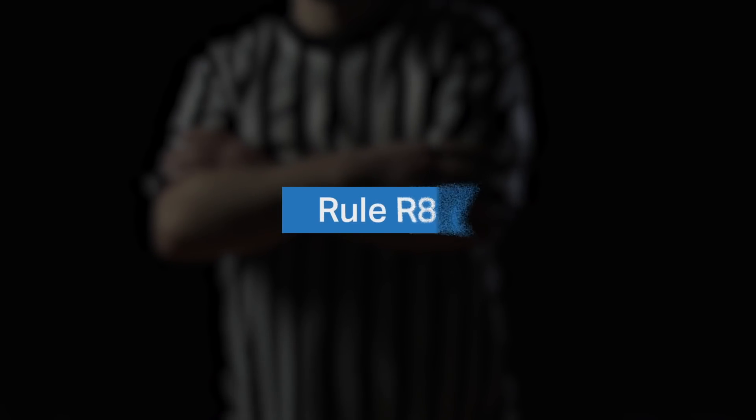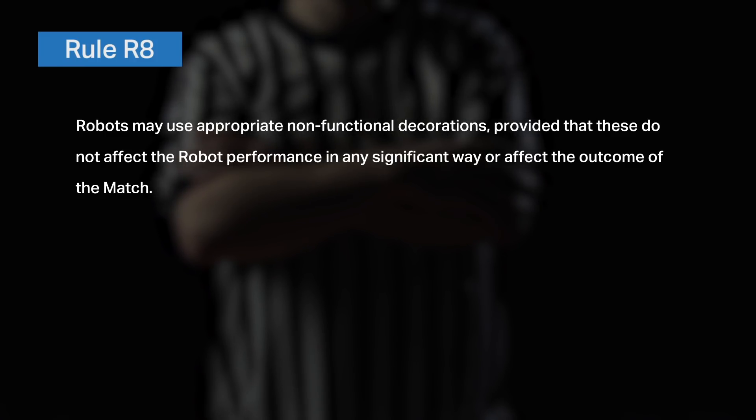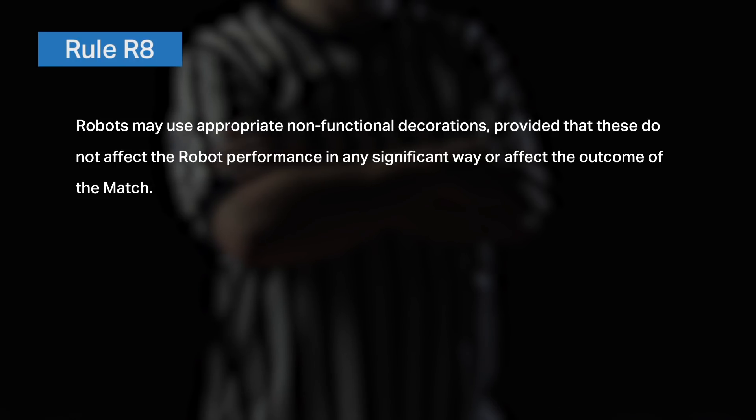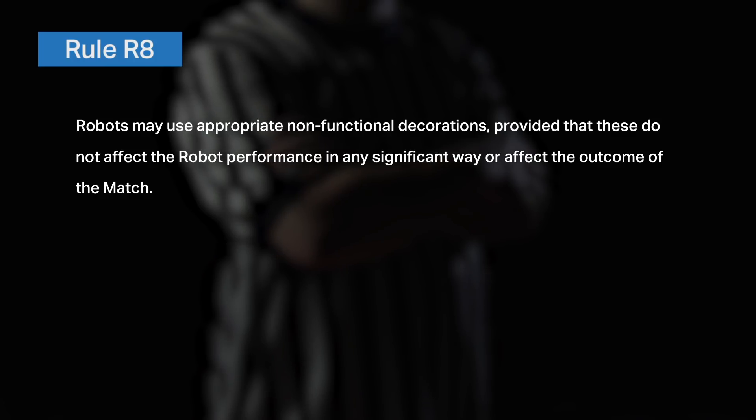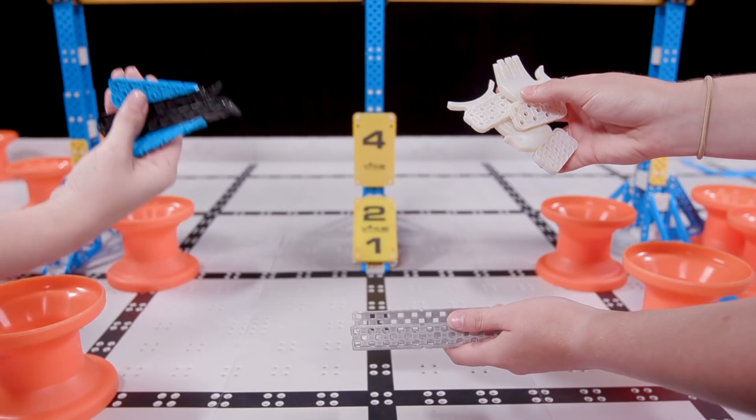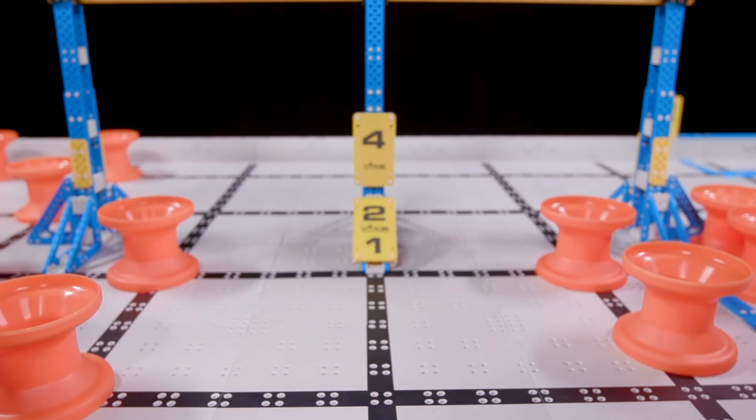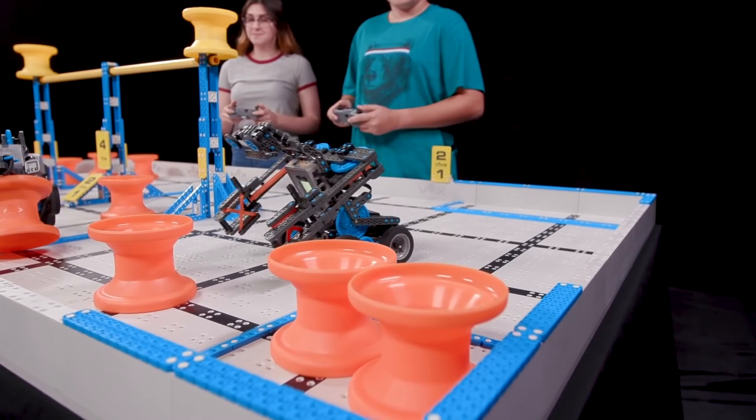And finally, there is Rule R8, which states that robots may use appropriate non-functional decorations, provided that these do not affect the robot performance in any significant way, or affect the outcome of the match. These decorations can be pretty much anything you want, including all of the things we just said aren't allowed, provided that they are safe within the spirit of an educational event, and most importantly, do not provide any functionality to your robot.